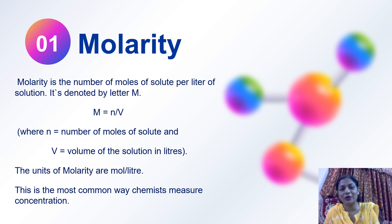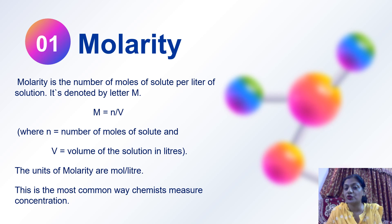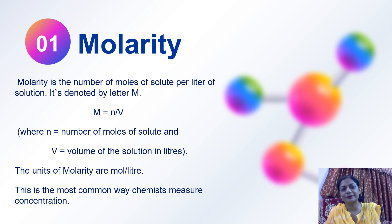Let's first discuss molarity. Molarity is the number of moles of solute per liter of the solution — note, it is per liter of solution. It is denoted by the letter capital M. Capital M equals N divided by V, where N is the number of moles of solute and V is the volume of the solution in liters. The unit of molarity is mole per liter. This is the most common way chemists measure concentration.